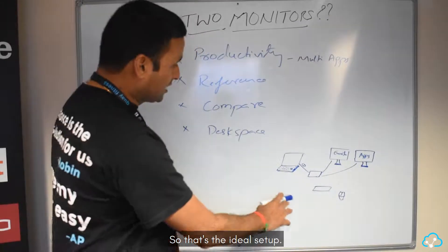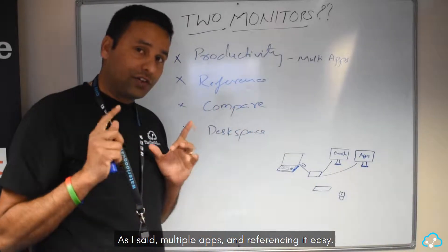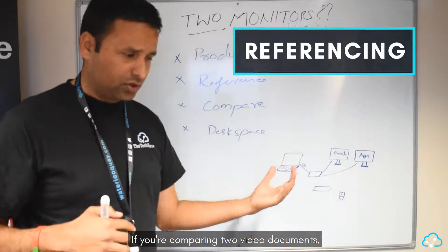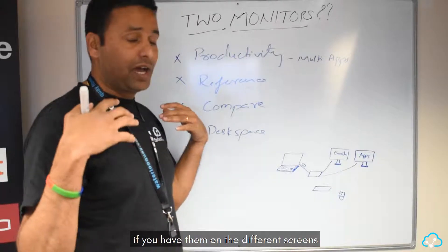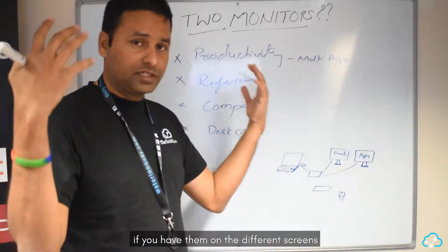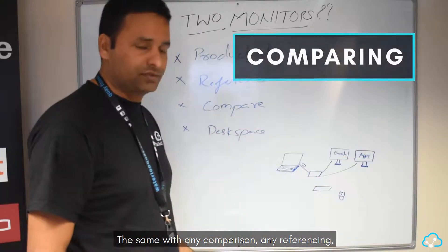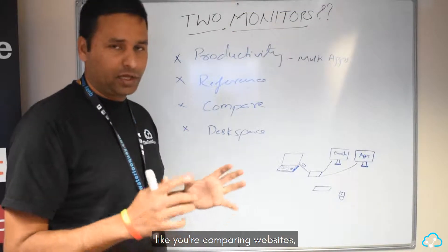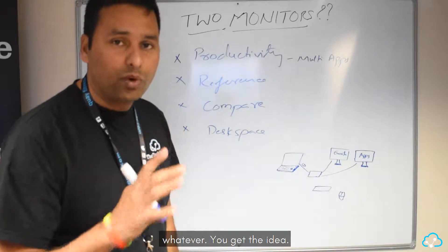That's the idea of why two monitors: productivity. Multiple apps and referencing is easy. If you are comparing two PDF documents or one document or another, whatever format it is, if you have them on different screens it's easy to see. Same with any comparison or referencing - comparing websites, documents, apps, whatever.